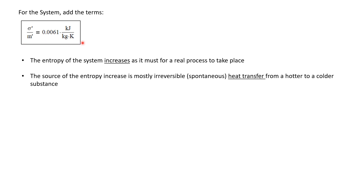That is a positive value, and of course in order for the heat exchanger process to take place, entropy must be produced — sure enough, the entropy of the system increases. We were asked for the source of the entropy increase. All spontaneous processes, and heat transfer from a hotter source to a cooler source is a spontaneous process, produce entropy. So the entropy increase is most likely due to the irreversible and spontaneous heat transfer from a hotter to a colder substance.